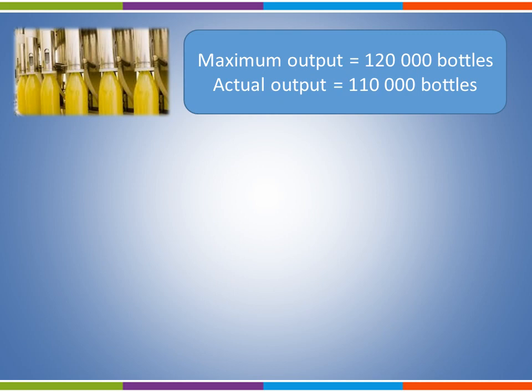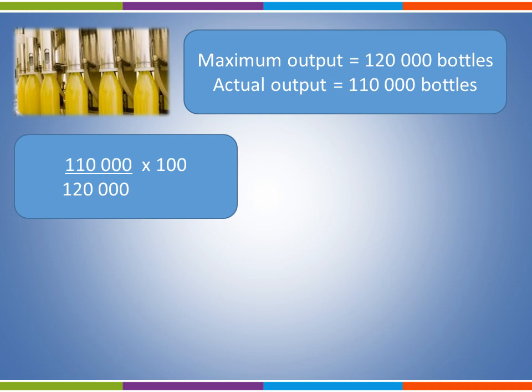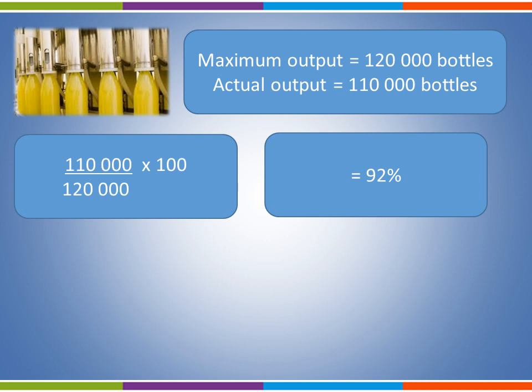Using our formula — actual output divided by maximum output multiplied by 100 — you should now have 110,000 divided by 120,000 times 100. We have a new capacity utilisation of 92%. The business is still not operating at full capacity as this would be 100%, however it is getting very close.